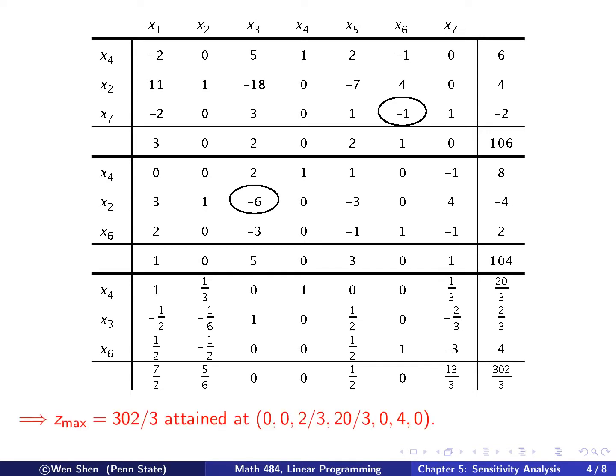Now I can conclude that the optimal value, Z max, is this number here. Where is it attained? Well, it's attained. X4 is this value, X3 is this value, X6 is this value. And all the others are 0. So 0, 0, 2/3, 2/3, 0, 4, 0.